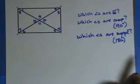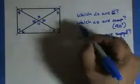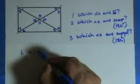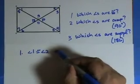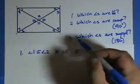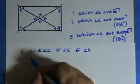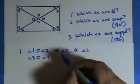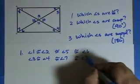All right, to answer the question which angles are congruent: angle 1 is congruent to angle 2, which are congruent to angle 5, which are congruent to angle 6. That's one set. Another set is angle 3 is congruent to angle 4, which are congruent to angle 7, which are congruent to angle 8.